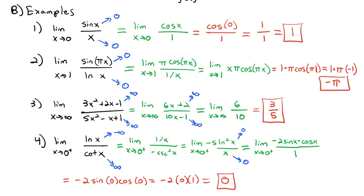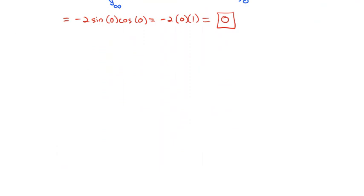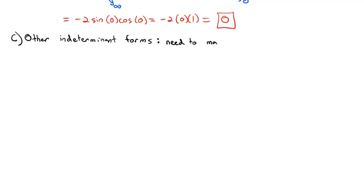So the big idea of L'Hôpital's Rule: if we have ∞/∞ or 0/0, we take the derivative of both the numerator and denominator so that we can evaluate the limit. We might have to do it several times, but eventually we get down to a limit. Those are the indeterminate forms L'Hôpital's Rule directly handles, but there are still other indeterminate forms. The general strategy for those is to massage them into either 0/0 or ±∞/±∞.